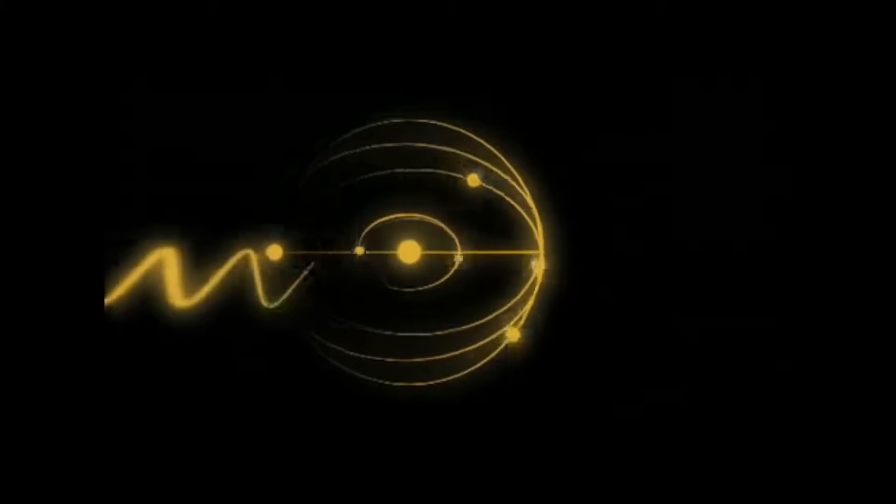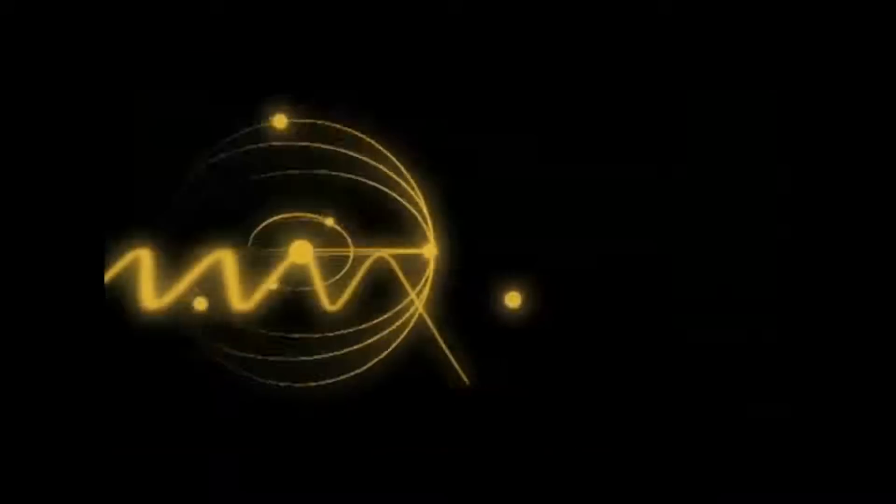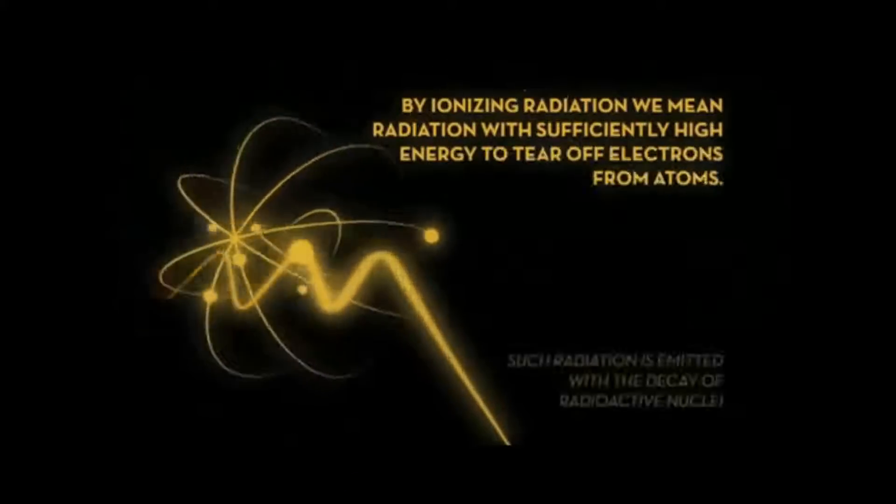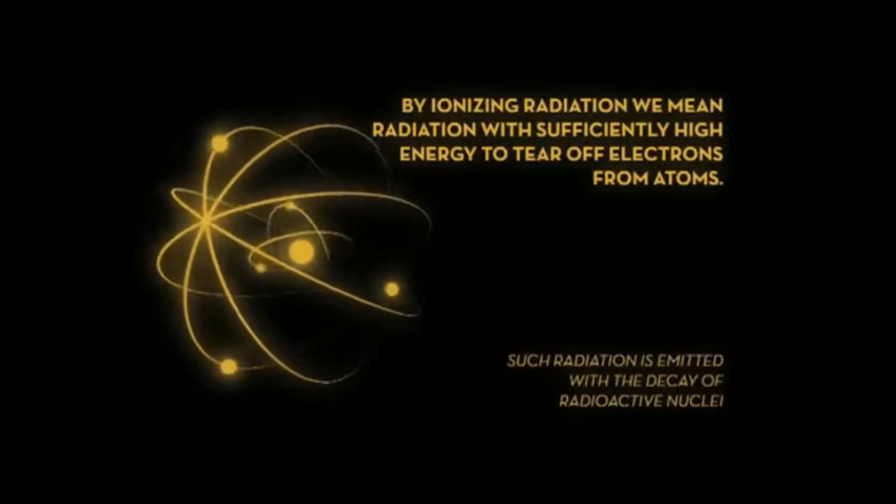By ionizing radiation, we mean radiation with sufficiently high energy to tear off electrons from atoms. Such radiation is emitted with the decay of radioactive nuclei, which may occur during nuclear reactions in the sun or in nuclear reactors.